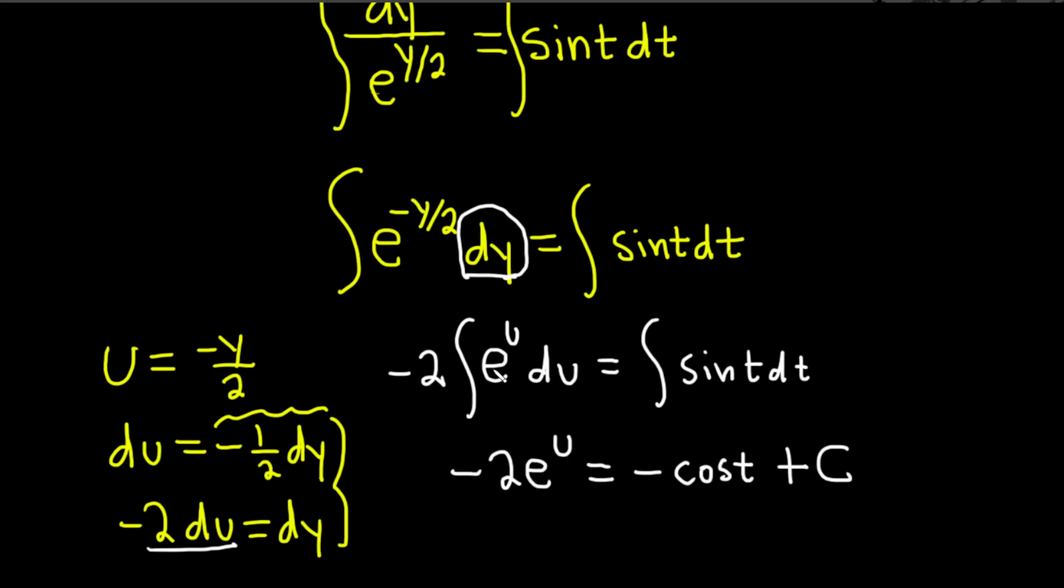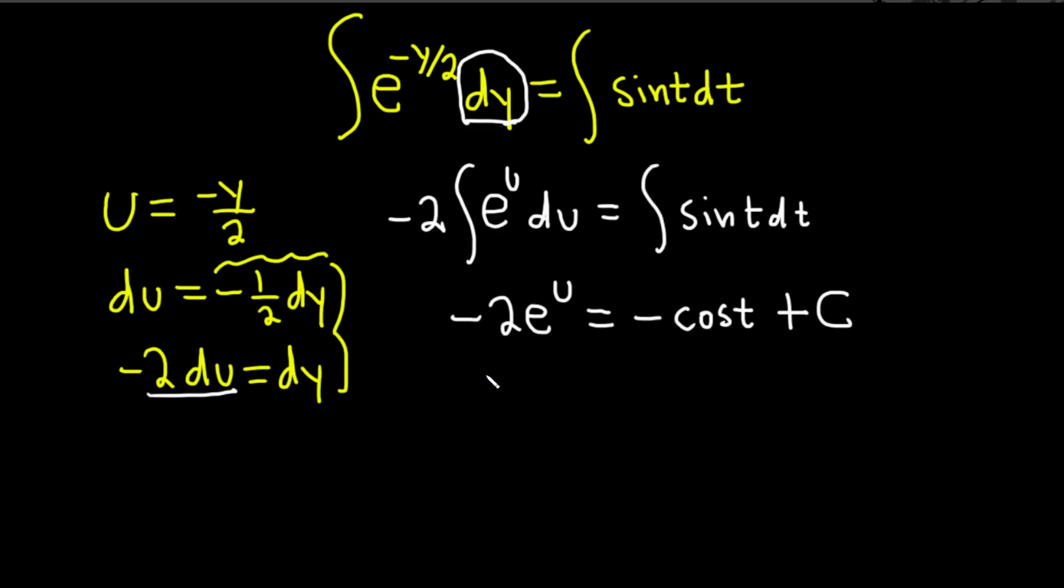We're not quite done. We still have the negative y over 2. So that's our u. Remember that was our substitution. So this will be negative 2 e to the negative y over 2 and that's equal to negative cosine t plus our constant of integration capital C.